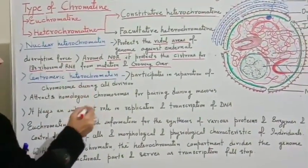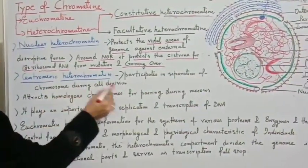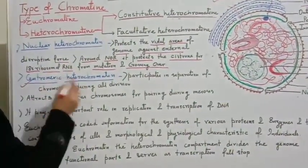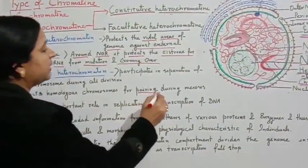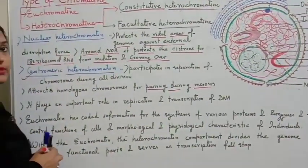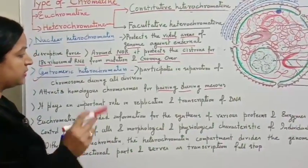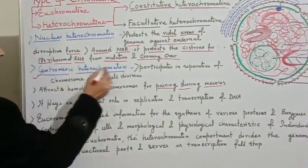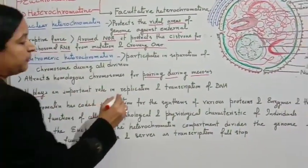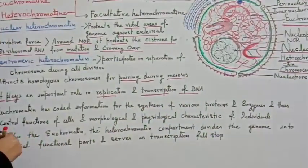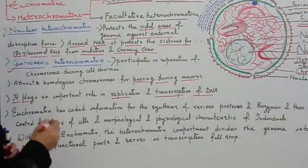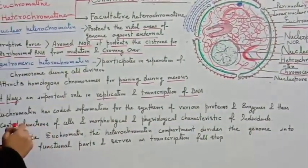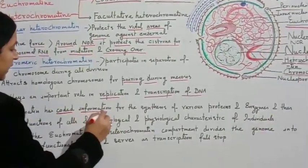Centromeric heterochromatin participates in the separation of chromosomes during cell division and attracts homologous chromosomes for pairing during meiosis — the homologous chromosomes come together at leptotene and zygotene. Euchromatin plays an important role in replication and transcription of DNA, and contains coded information for the synthesis of various proteins and enzymes.